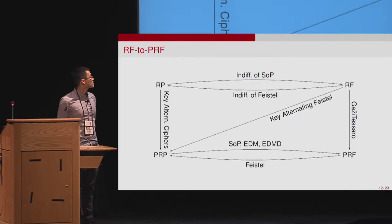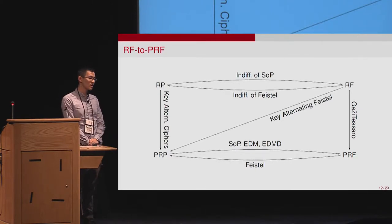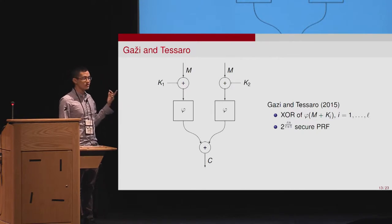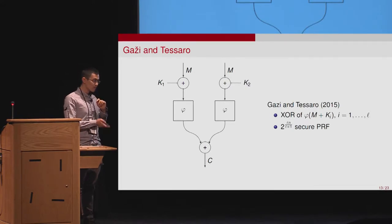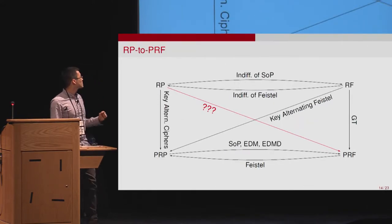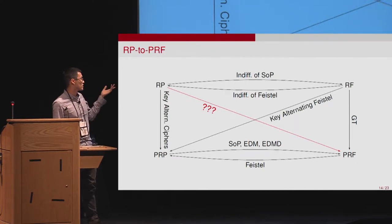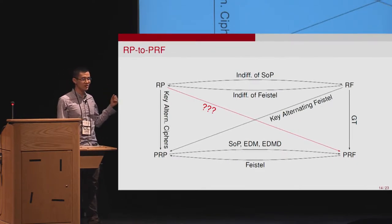The next problem is the conversion from RF to PRF, considered by Gaussi and Cesaro. In 2015, they presented a construction that turns an RF into a PRF. This makes the only remaining open problem: how can we design a pseudorandom function from public random permutations, which is the title of this work.